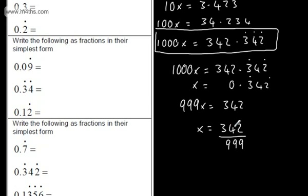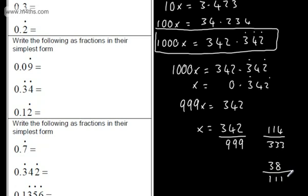What we need to do from here is see if we can cancel this down. We can divide by 3, which gives me 114 over 333. We can divide by 3 again, which gives us 38 over 111. And looking at that, that's about as far as it's going to go. The way I looked at that: looking at 342, I know I can divide by 3 to get 114; and 999 divided by 3 is 333; then divide again by 3 to get 38 over 111.